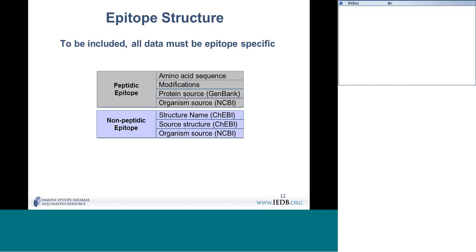Epitopes are given a protein source if they are naturally derived from a protein, and we use GenBank identifiers for them. If the author specifically mentions they used a particular GenBank entry, we keep that ID with their epitope. If the author does not provide one, we use a representative protein from GenBank that is 100% matching to the epitope and matches the author's protein name and organism. We have evidence codes indicating whether it is the author-provided GenBank entry or a representative.